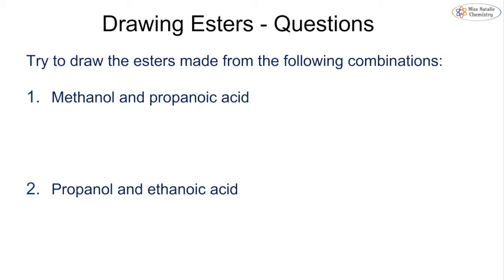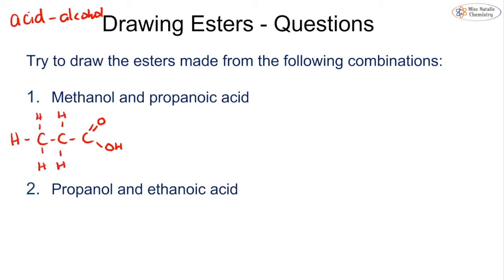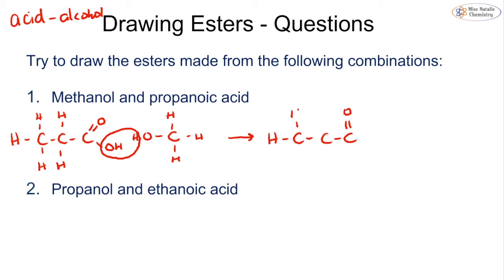Let's practice drawing esters. For methanol and propanoic acid, draw the acid first: propanoic acid has three carbons in a row with all hydrogens, then methanol has one carbon with its OH and hydrogens. We remove the OH from propanoic acid and the H from methanol — losing water — then the remaining oxygen from methanol bonds to the carbon, giving us our ester. We'll name this shortly.